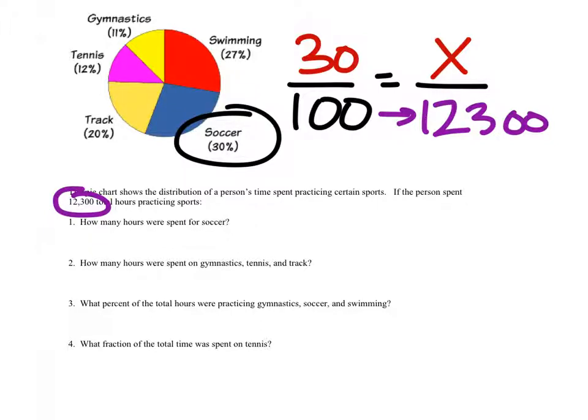Some of you guys would just take 0.3 and multiply it by 12,300. Just be careful doing that, okay? Because sometimes we may have to divide.